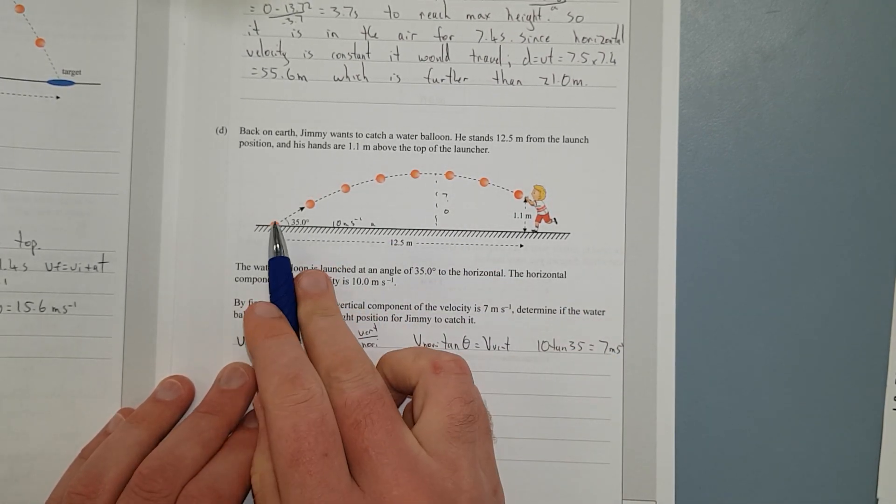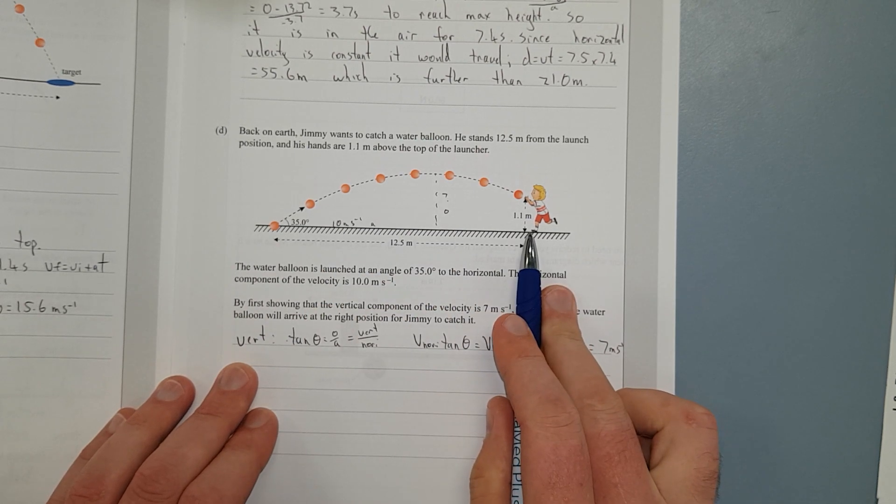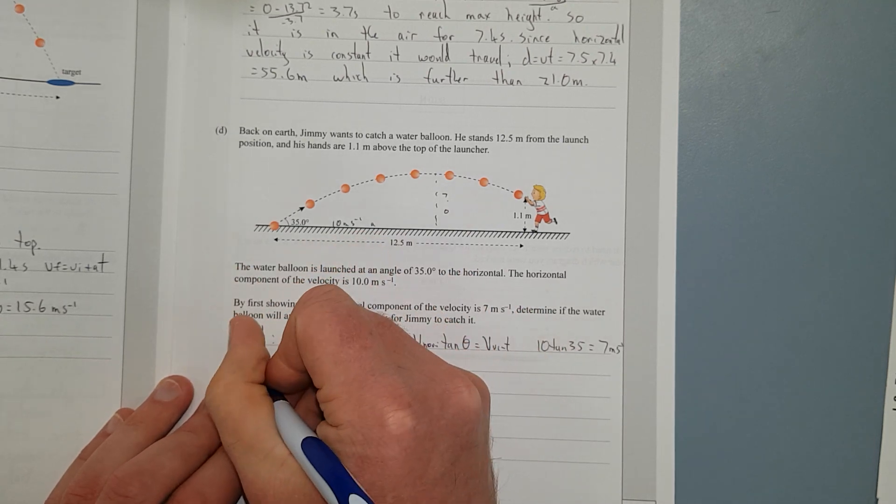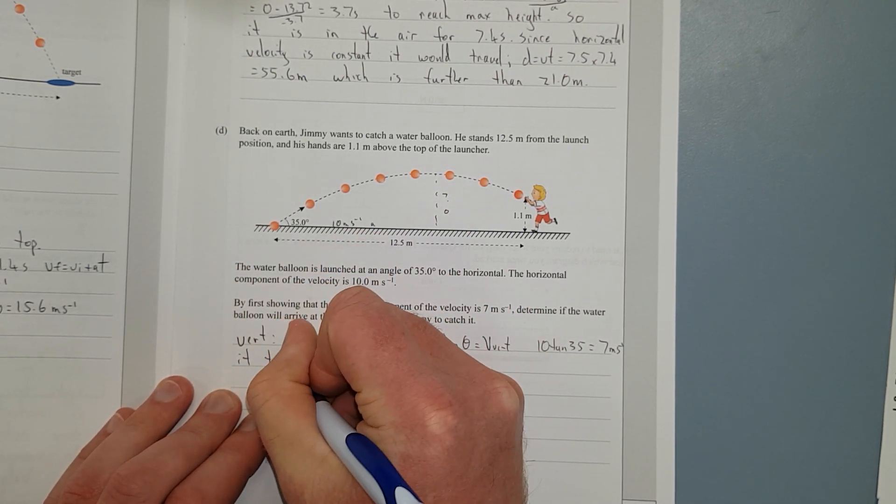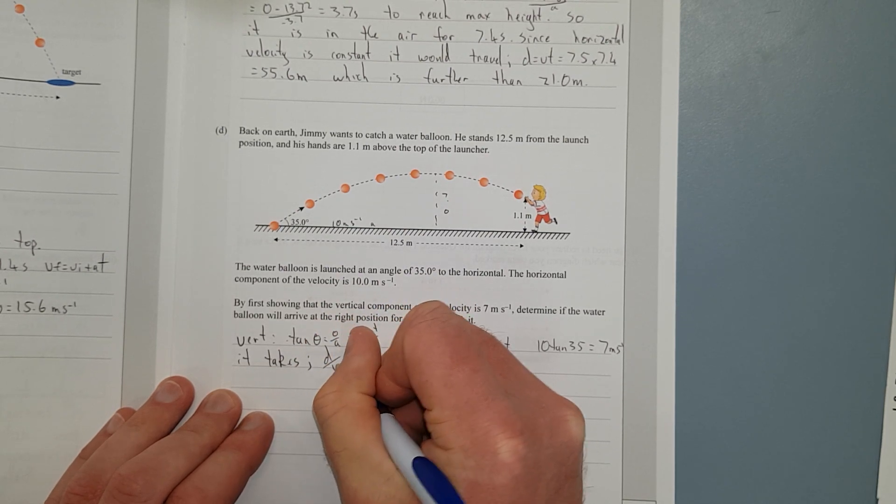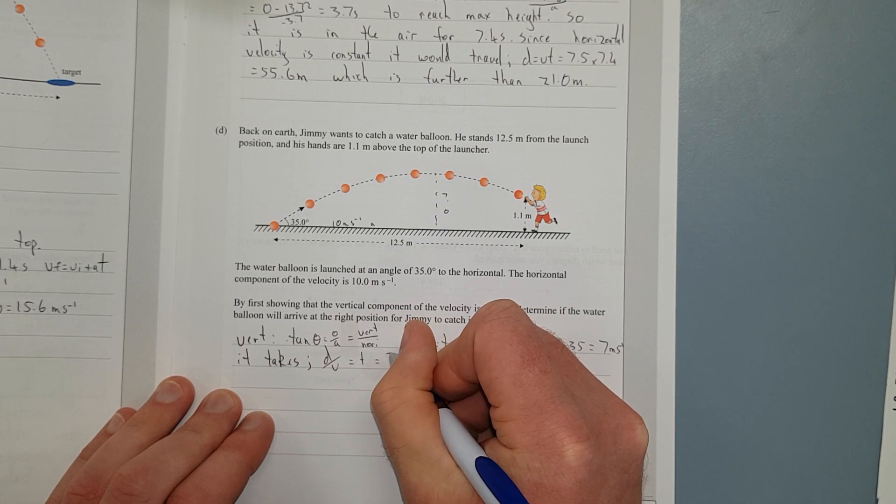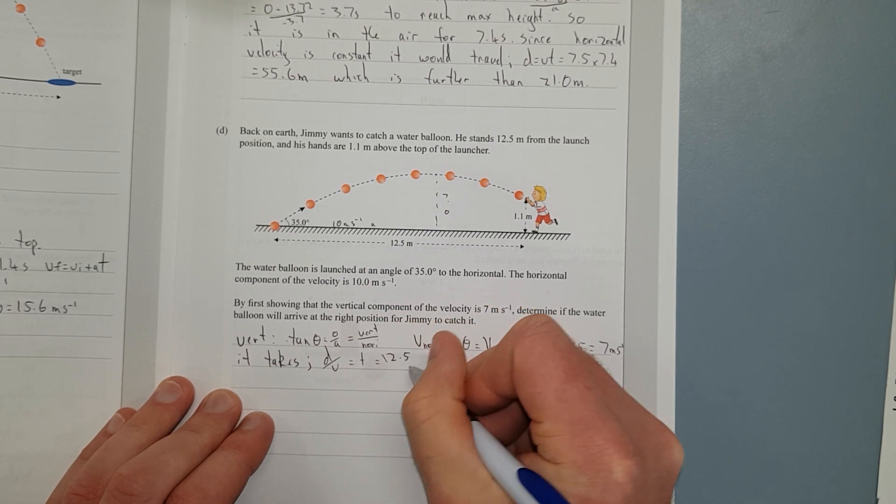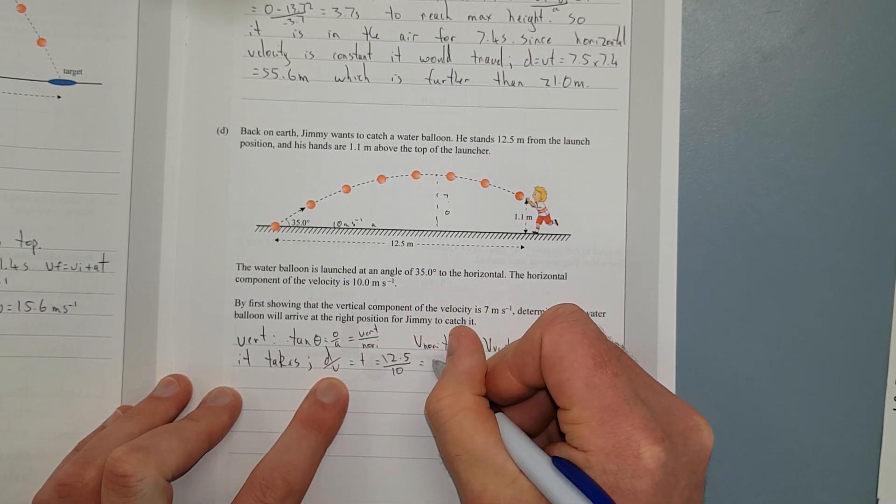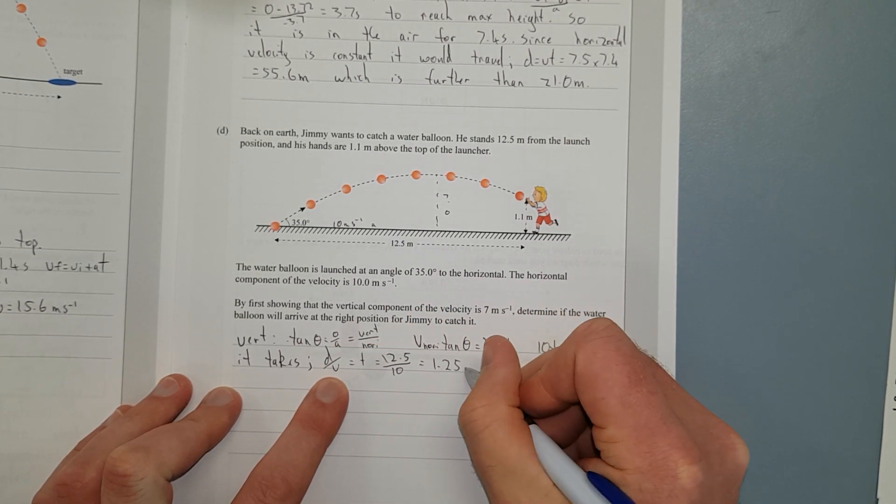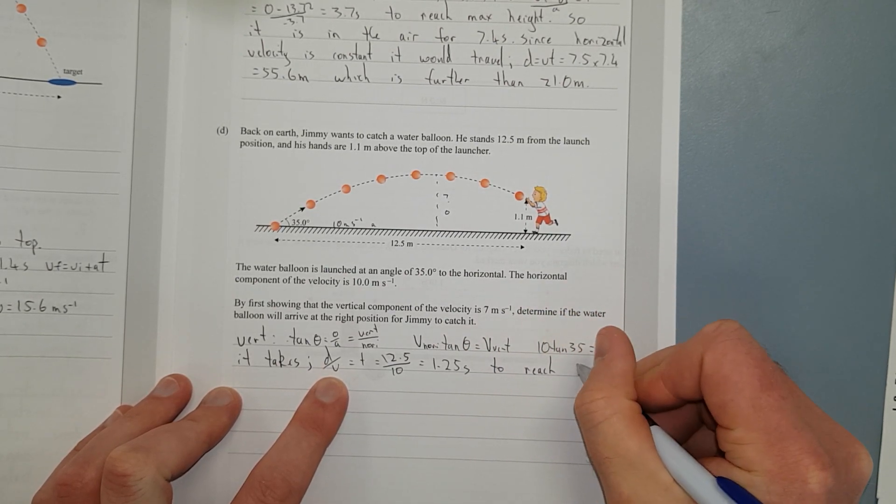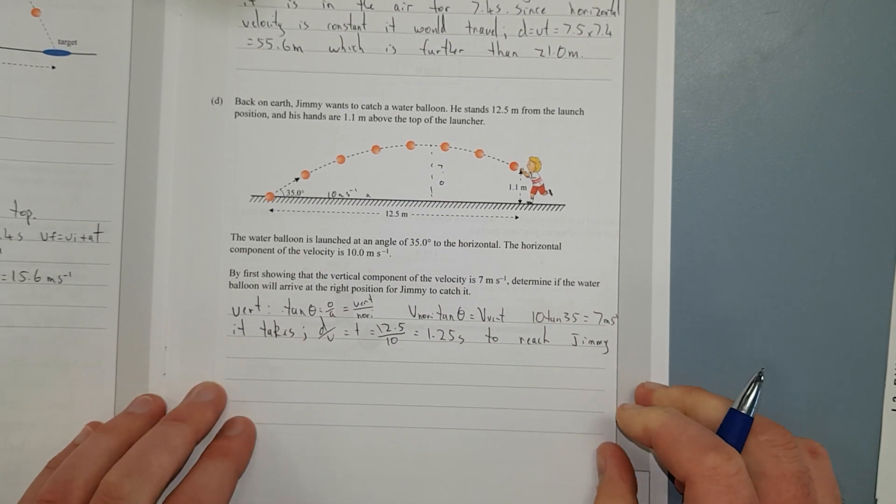Now we need to find out how long it takes to go from here to here so we can plug that time into our position formula, our vertical position formula. Distance over velocity gives me time, which is going to give me 12.5 divided by, what's the horizontal velocity? 10, equals 1.25 seconds to reach Jiminy.